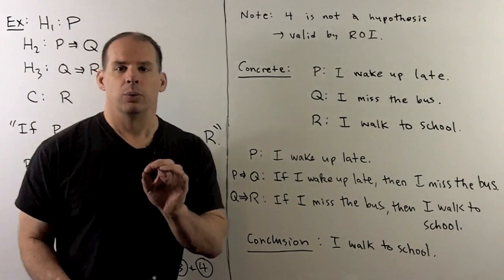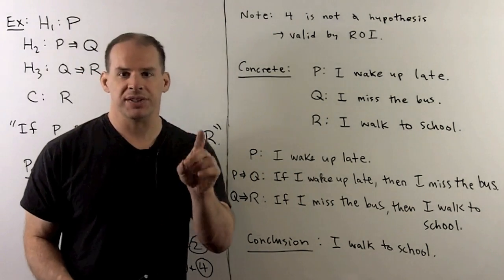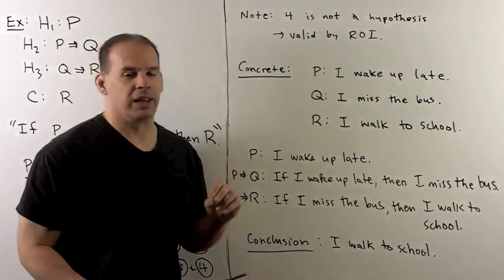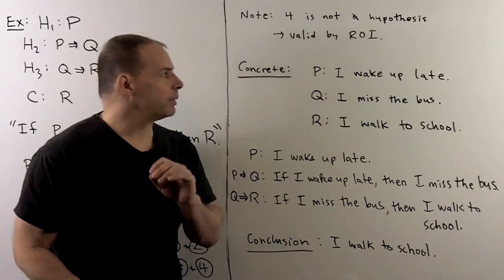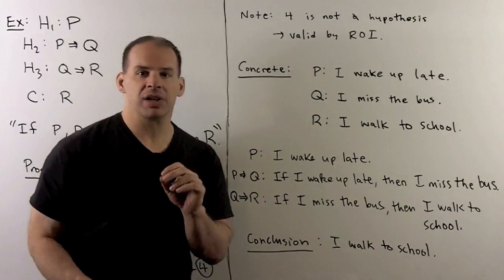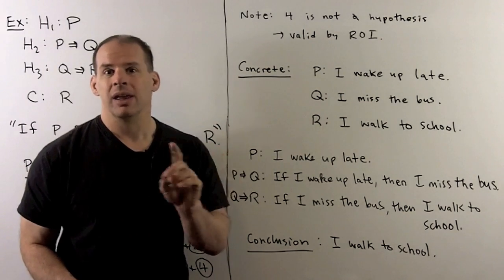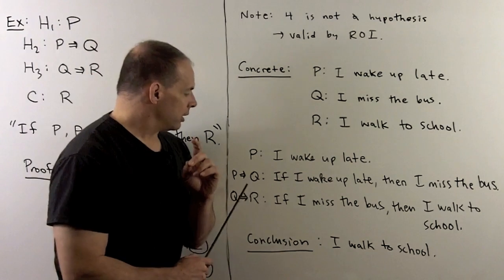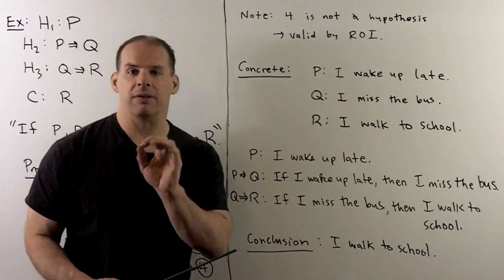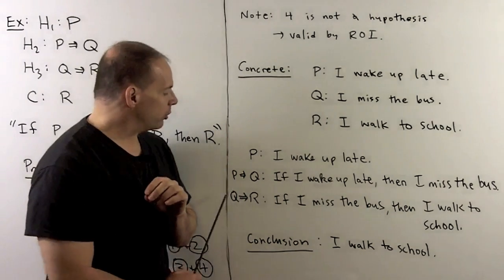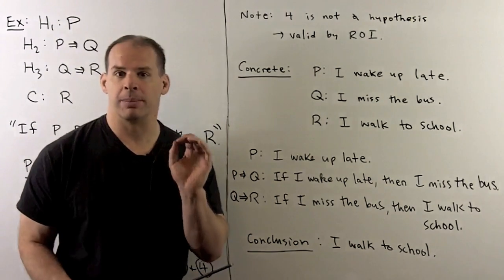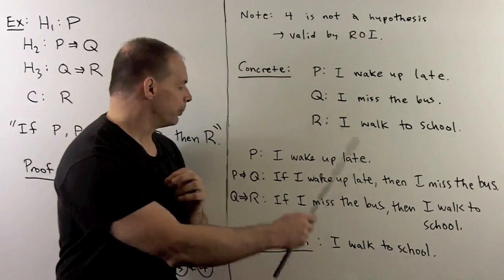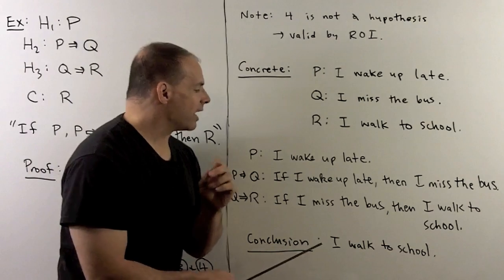To make this more concrete, let's put things into English. Let p be 'I wake up late,' q be 'I miss the bus,' and r be 'I walk to school.' Then the hypotheses are: I wake up late; if I wake up late, then I miss the bus; if I miss the bus, then I walk to school. If all three are true, then the conclusion is that I walk to school.